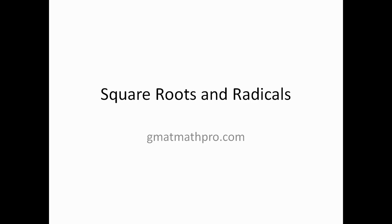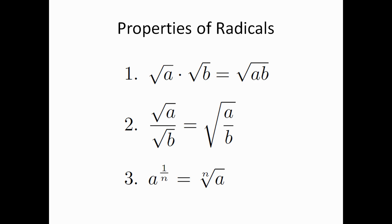This video from the foundation series of GMATMathPro.com covers the basics of square roots and radicals. The first property we'll look at says that the square root of A times the square root of B is equal to the square root of A times B. In other words, the product of two square roots equals the square root of that product A times B.